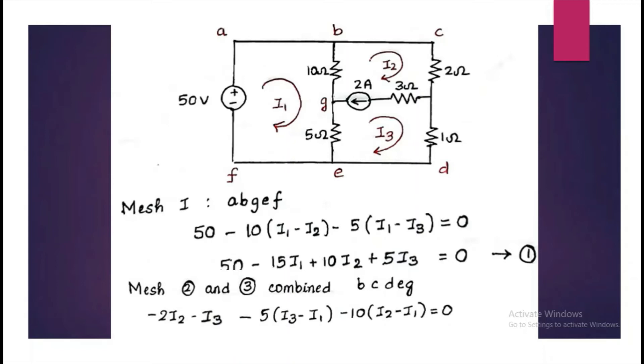Next, we have to consider the current source. The current source is common to both mesh 2 and 3, so the currents flowing there are i2 and i3. The equation will be i2 minus i3 is equal to 2 ampere.